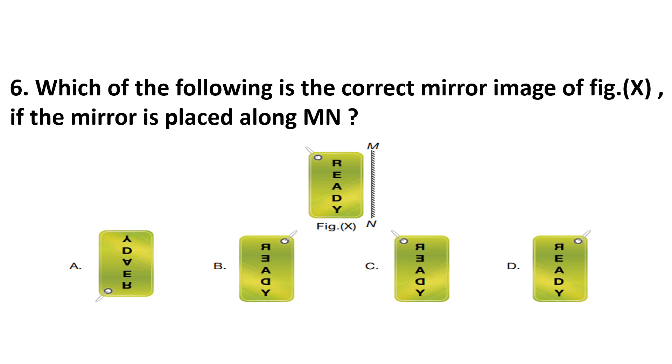Question number 6. Which of the following is the correct mirror image of figure X? If the mirror is placed along M10. Kids, this is figure X and this is mirror. Option A is incorrect as this is water image, not the mirror image. Option B is our answer.